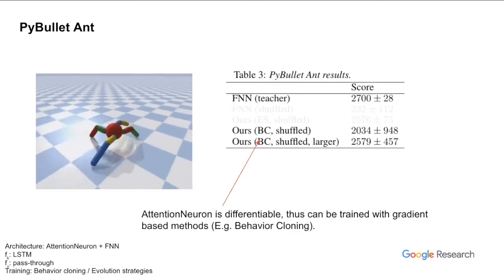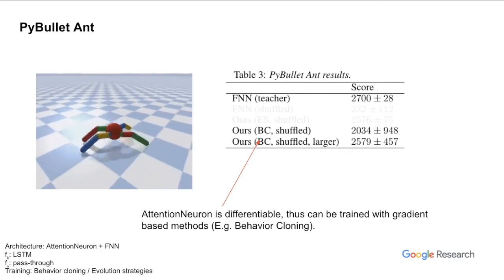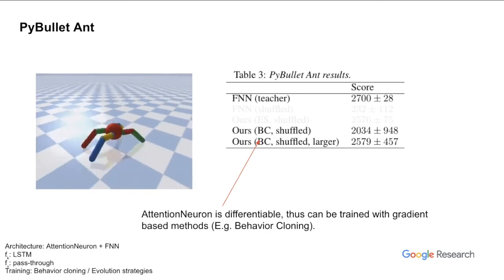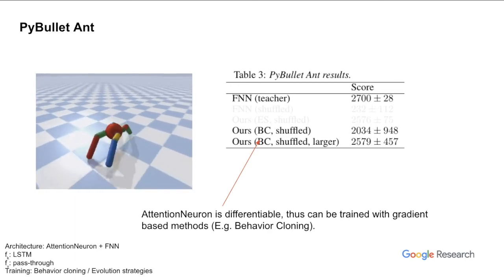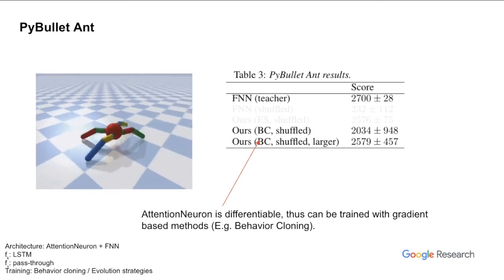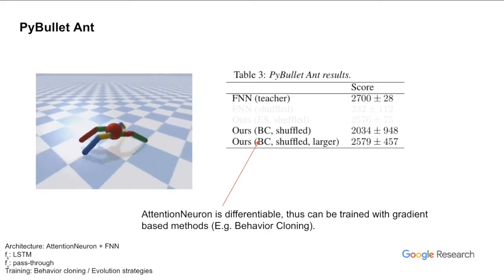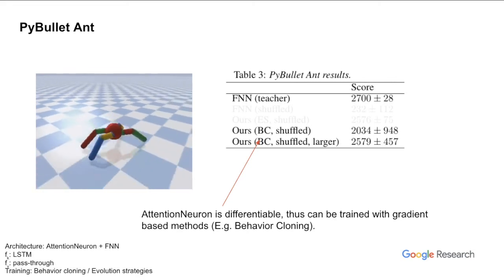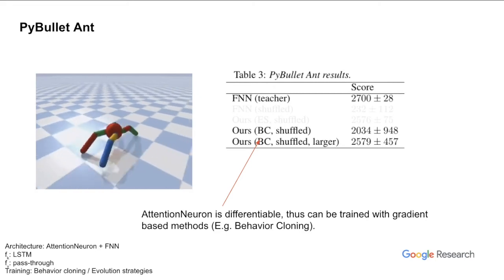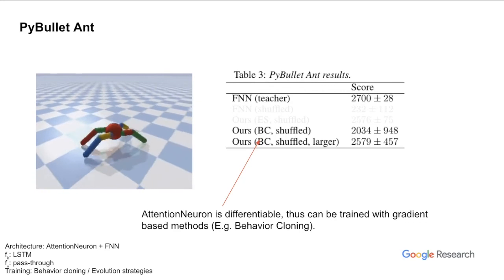Although we've been training the agent using evolution strategies, we want to point out that the attention neuron is differentiable, so we can also train our agent using gradient-based methods. Specifically, we behavior-cloned from the baseline policy. Due to the inductive bias in the architecture, a student policy of similar size to the teacher cannot achieve close enough performance, but when we enlarge the network, its performance increases. This is important because training an agent from scratch is costly — if we have pre-trained models in hand, we can use behavior cloning to efficiently create permutation invariant equivalents.